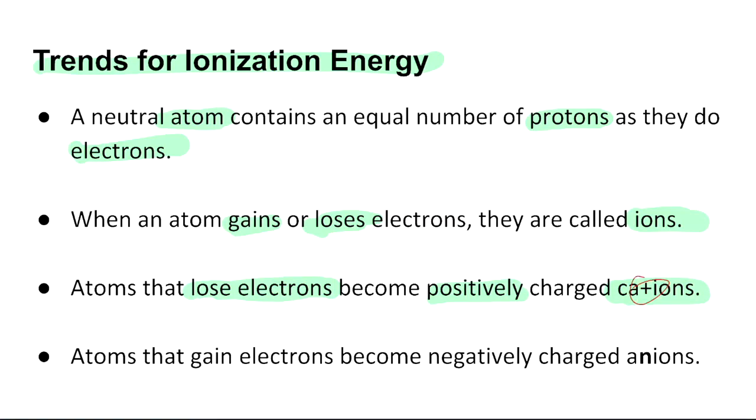And if you notice here, I use the little T as a plus symbol to kind of be the little trick to help remember that it's positively charged. On the other hand, we've got atoms that gain electrons, and they become negatively charged. And we put emphasis on the N in the word anions, to represent negatively charged ions.